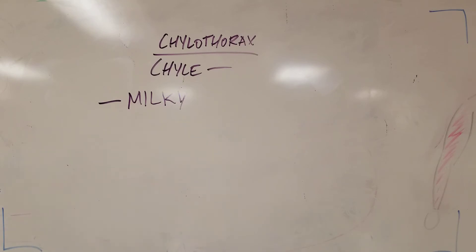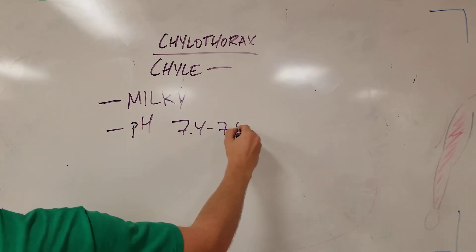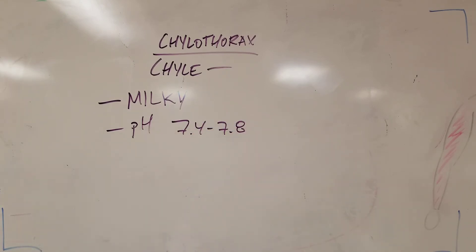Next thing is you want to send this fluid to your lab for analysis to cytology and pathology. You're going to want to see a pH that's actually pretty normal. 7.4 to 7.8 is going to be consistent with chyle.